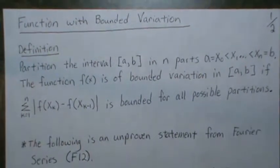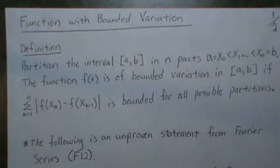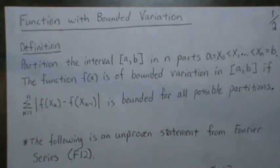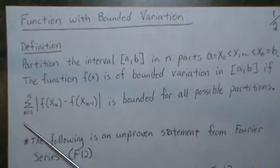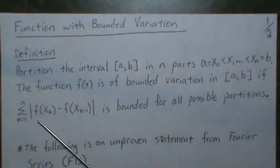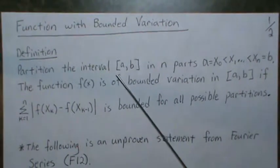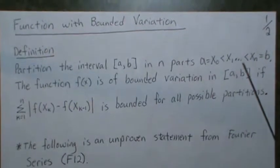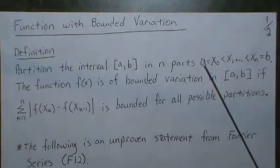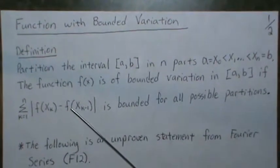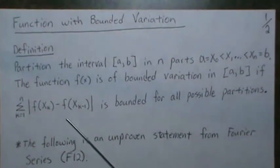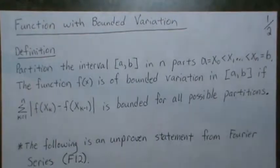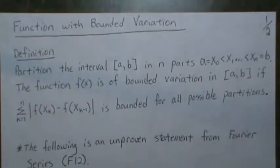In this video we're going to look at a function with bounded variation. We're going to define what it means and then look at something called Jordan's decomposition. The definition of a function of bounded variation is this: partition the interval a to b into n parts by picking n plus one points where the anchors are at a and b. The function is of bounded variation on [a,b] if this sum is bounded for all possible partitions.